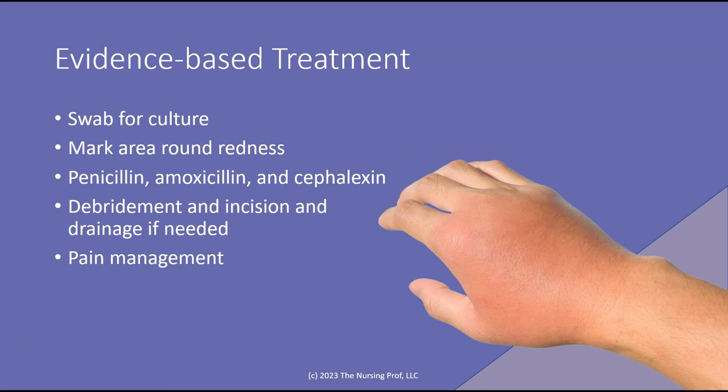What is our evidence-based treatment? First, we want to swab it for a culture to identify the organism. It doesn't always result in positive bacterial growth because the infection is underneath the skin, but if there is drainage we may find bacteria there or on the skin surface. Mark the area around the redness so we can follow whether it's getting bigger or smaller — that's done with a single-use surgical marker. Penicillin, amoxicillin, and cephalexin are our antibiotics of choice.